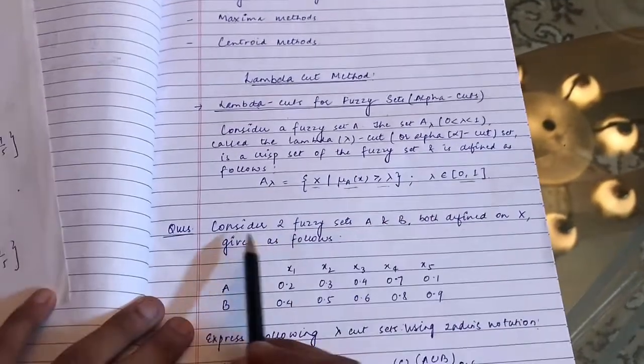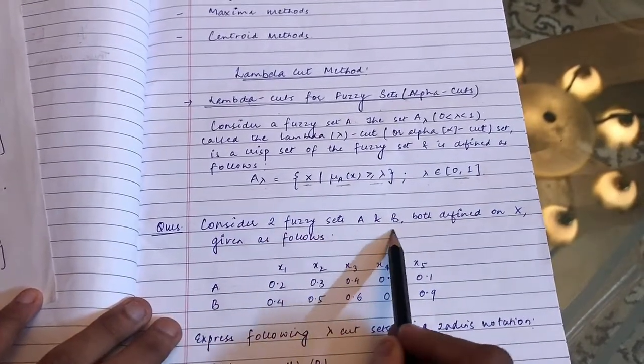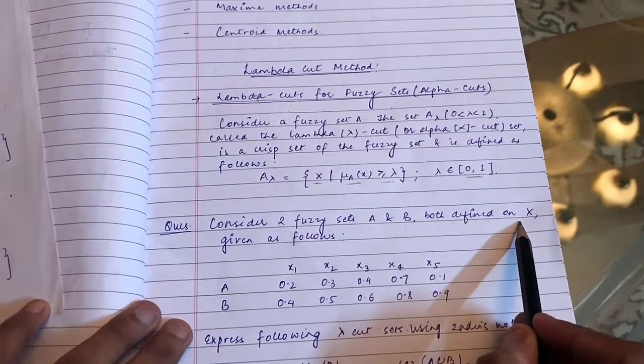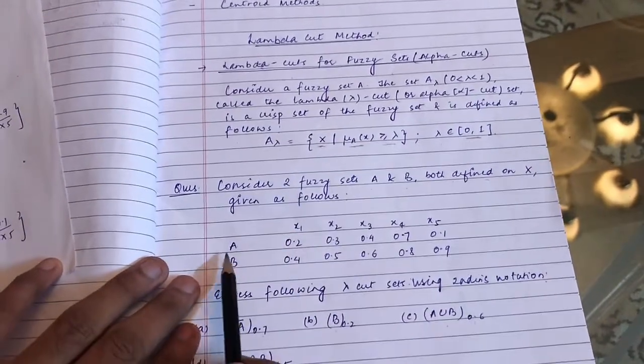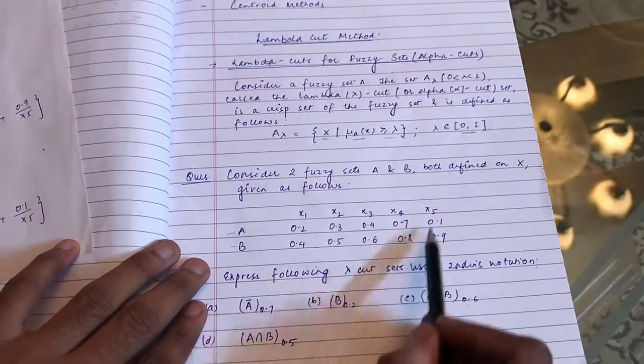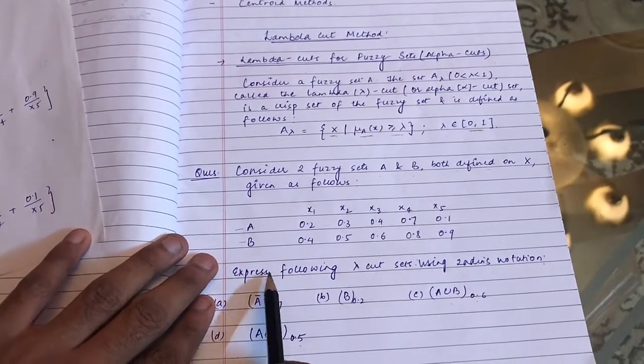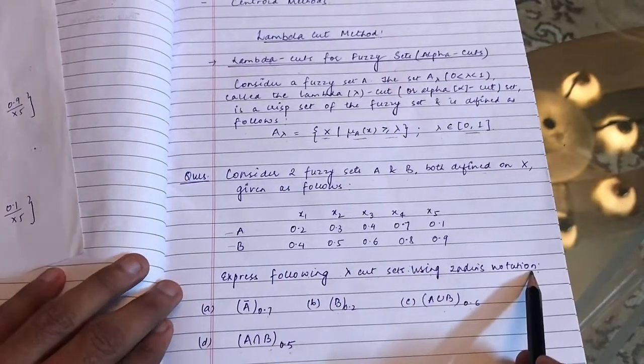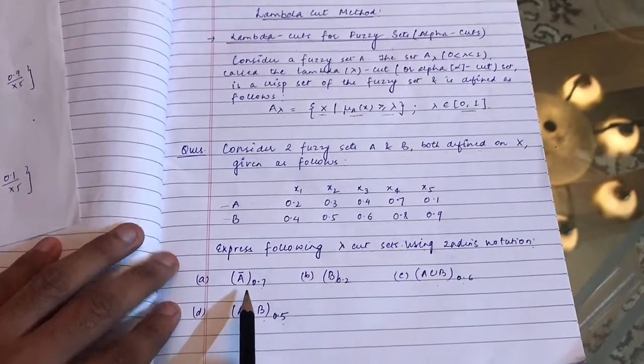Let us see a question. Consider two fuzzy sets A and B, both defined on the universe of discourse X, given as follows. A and B membership functions for x1, x2, x3, x4, x5 have been given in the equation, and we are asked to express the following lambda cut sets using Zadeh's notation.